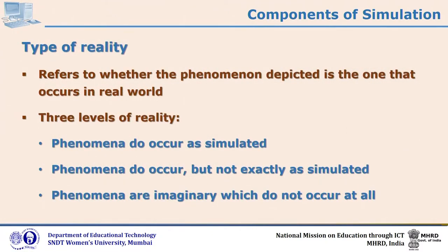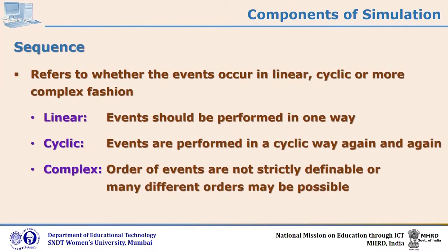Another component is type of reality. This reality refers to whether the phenomenon depicted is the one that occurs in the real world or not. Depending on the relationship between the real world and its representation, there can be three levels of reality: phenomena occurring exactly as simulated, phenomena that occur in the real world but not exactly as simulated, or phenomena that are entirely imaginary and designed to build logic and problem-solving situations for the learner.